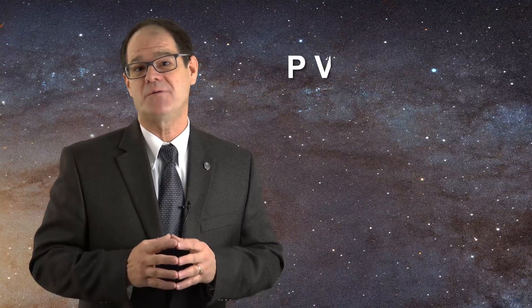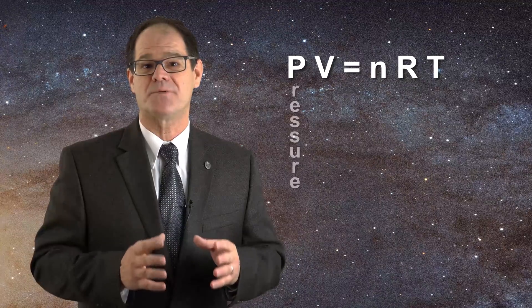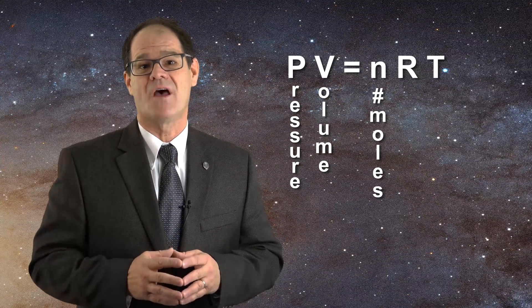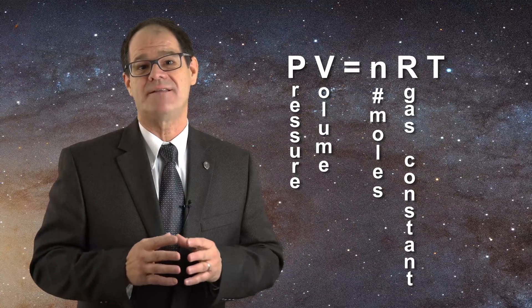As an example, we can look at the ideal gas law for a simple monoatomic gas like helium. The ideal gas law can be expressed as PV equals NRT, where P corresponds to pressure, V to volume, N to the number of moles of substance, R to the gas constant, and T to temperature.